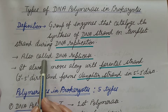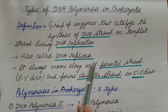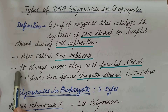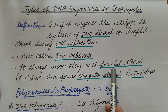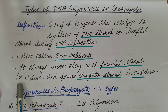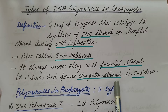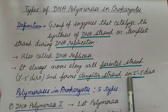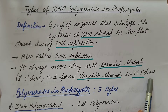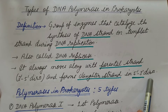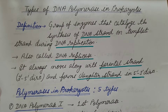They are also called DNA replicase. They always move along the parental strand in the 3' to 5' direction and form the daughter strand in the 5' to 3' direction. This was also discussed in detail with the help of a diagram in the previous video; you can refer to it.